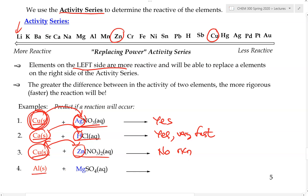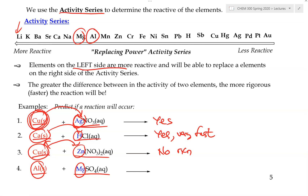Example 4: aluminum reacting with magnesium sulfate. If anything is going to happen, it will be metal replacing metal — can aluminum replace magnesium? Looking at the activity series, magnesium is to the left of aluminum, so magnesium is actually more reactive. Aluminum is less reactive and therefore aluminum cannot replace magnesium. So there is no reaction.